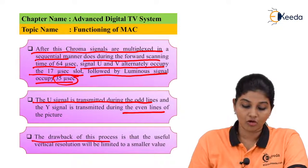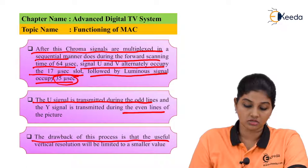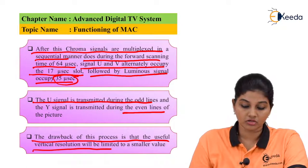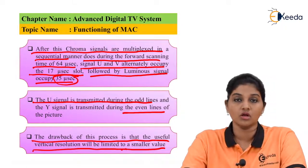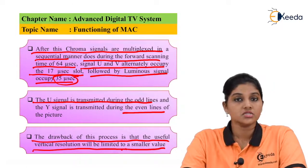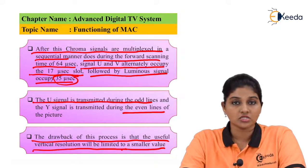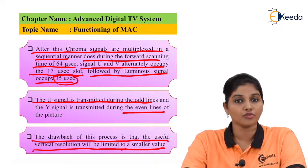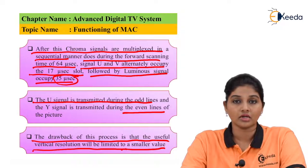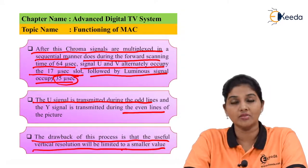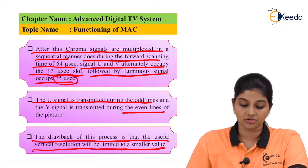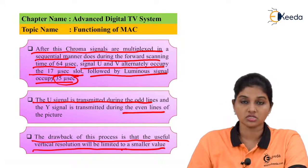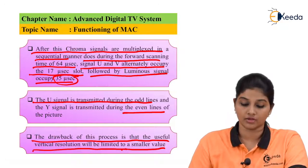The drawback of this process is that the useful vertical resolution is limited to a smaller value. In the MAC system, vertical information important from the transmission point of view is limited, because the transmission is divided into odd and even lines.